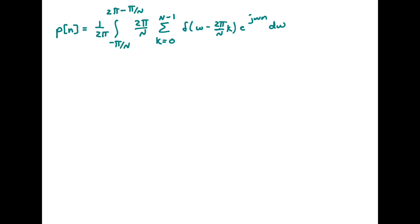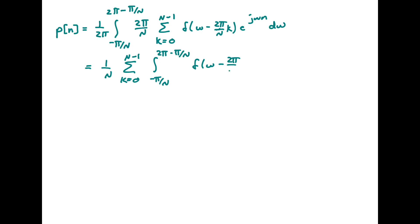We've reduced our problem to solving this equation. We can immediately see simplifications: we pull out the 2π/N factor, the 2π's cancel, leaving 1/N. Next, we reverse the order of the integral and the summation, giving the sum from k = 0 to N−1 of the integral from −π/N to 2π − π/N of δ(ω − 2πk/N) times e^(jωn) dω.